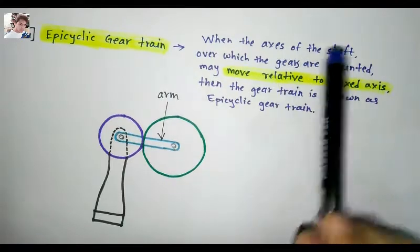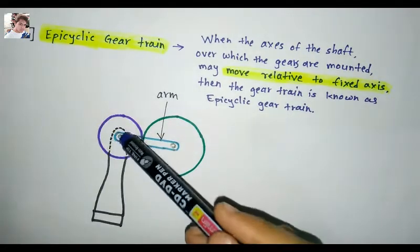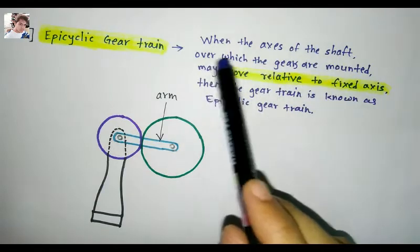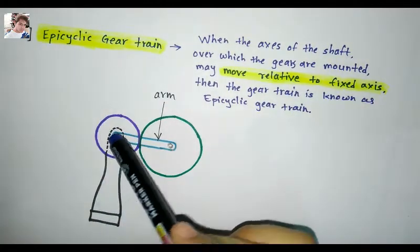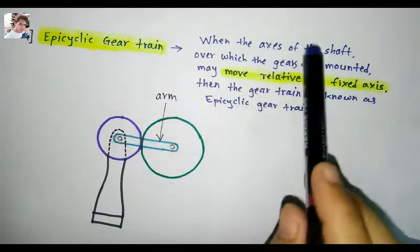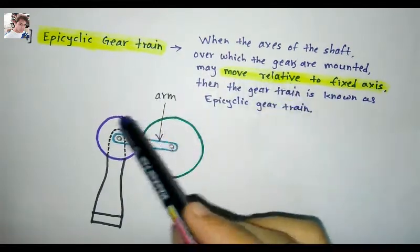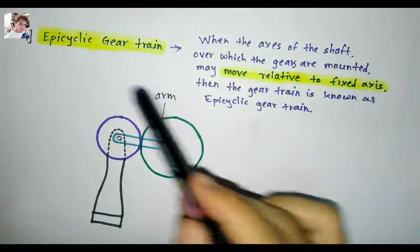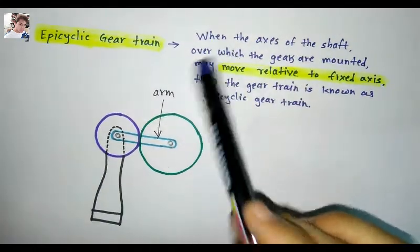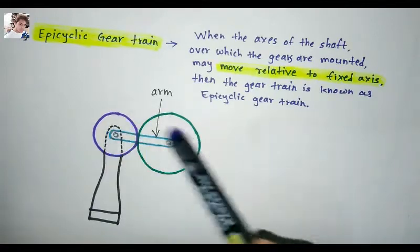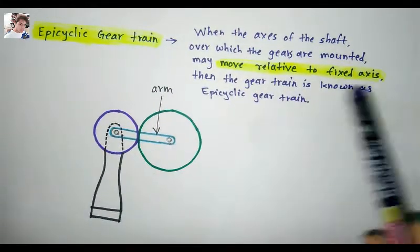The last type is an epicyclic gear train. This is the arrangement when the axis of the shaft over which the gears are mounted may move relative to a fixed axis. When the axis of the shaft over which the gears are mounted may move relative to a fixed axis, then the gear train is known as an epicyclic gear train.